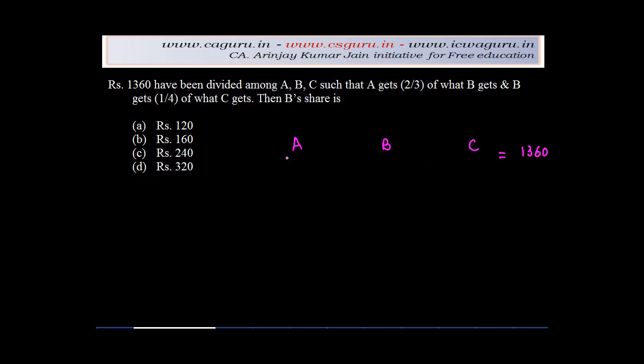So you are given that the amount of money that A gets is 2/3 of what B gets. So 2/3 of B. And it is also given that B gets 1/4 of what C gets. 1/4 of C.